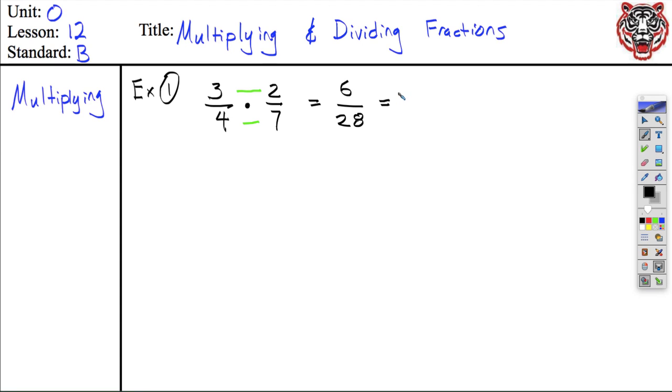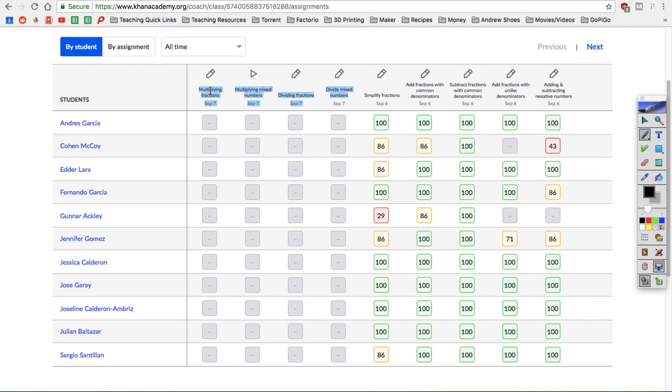Simplify, divide them both by 2. Yep. You get 3 over 14. 3 over 14. Thumbs up, thumbs down. Do you agree with Gunner's answer? I also agree with Gunner's answer.